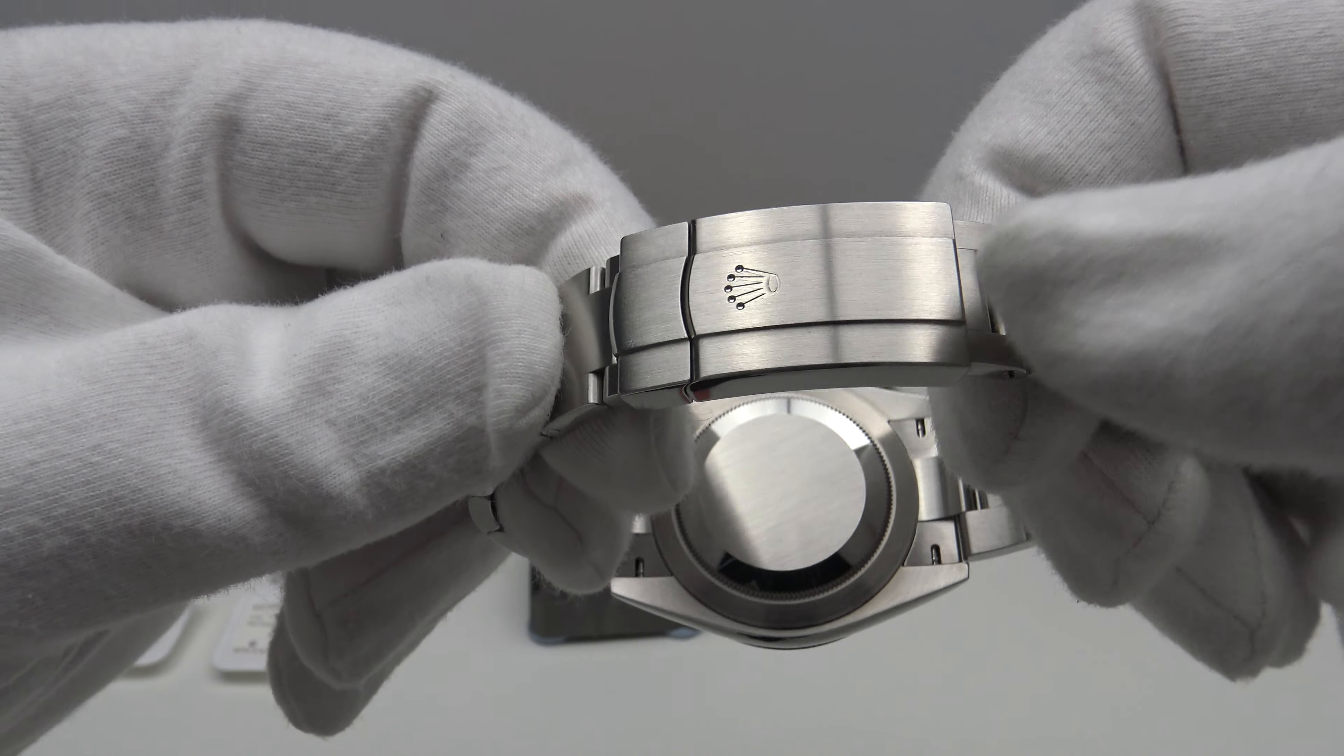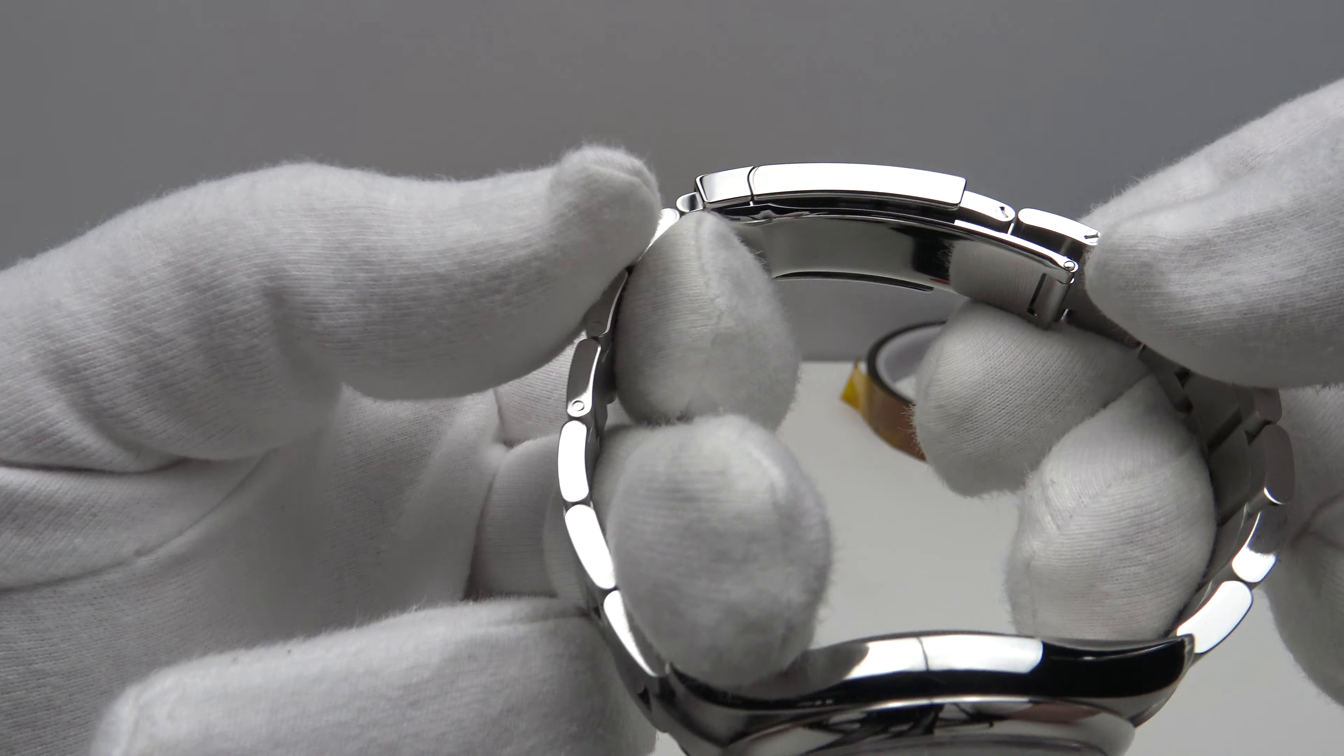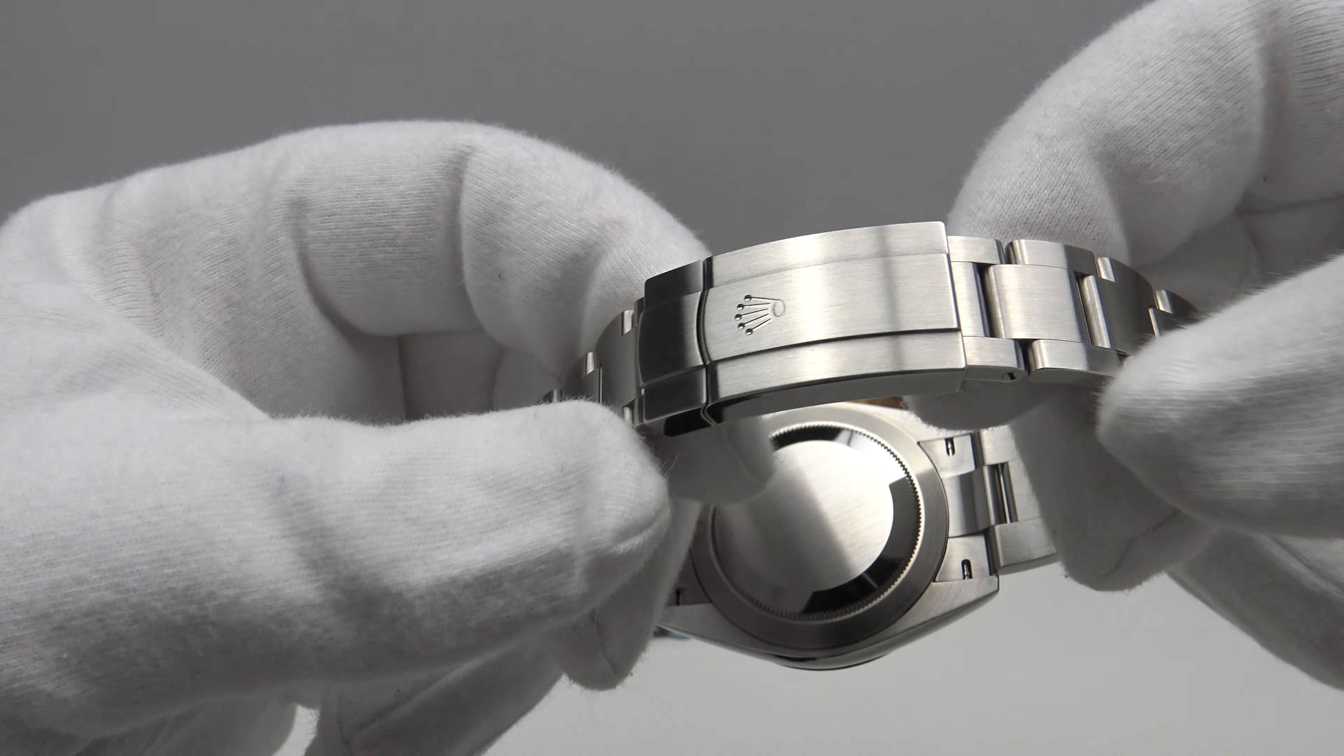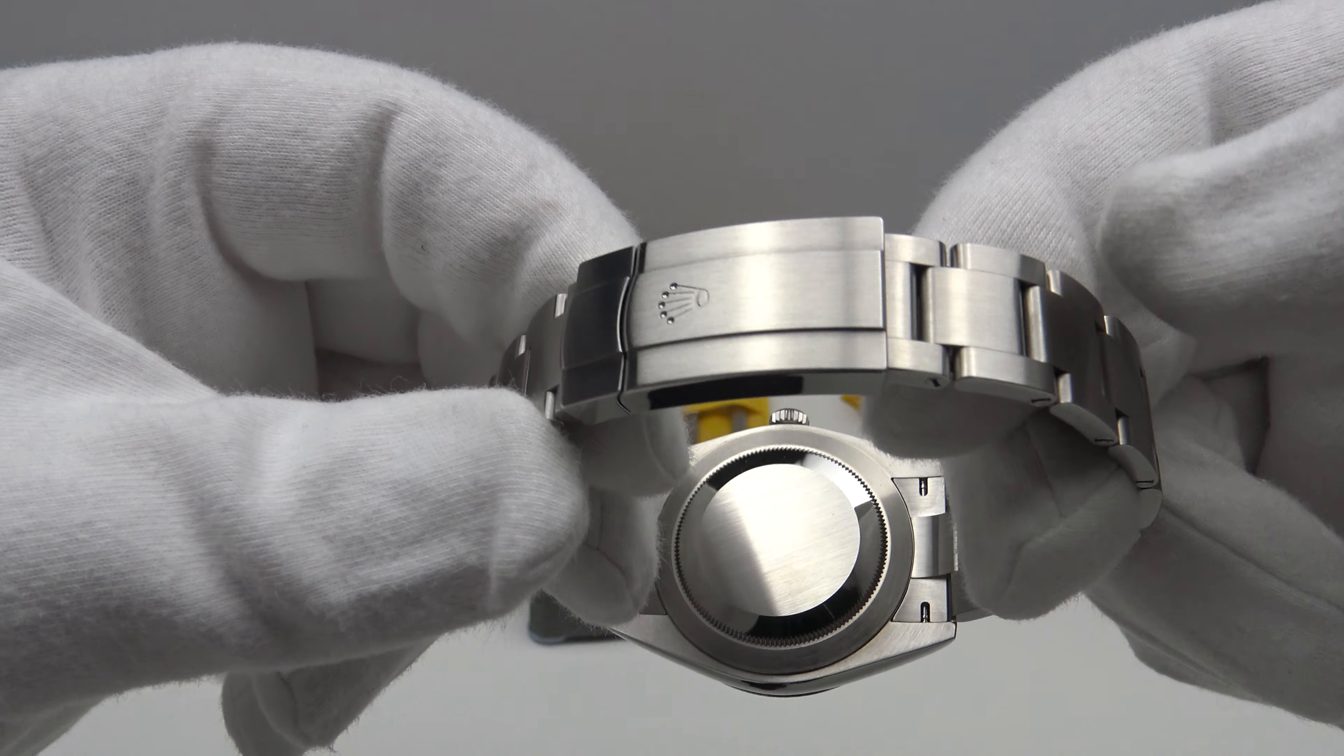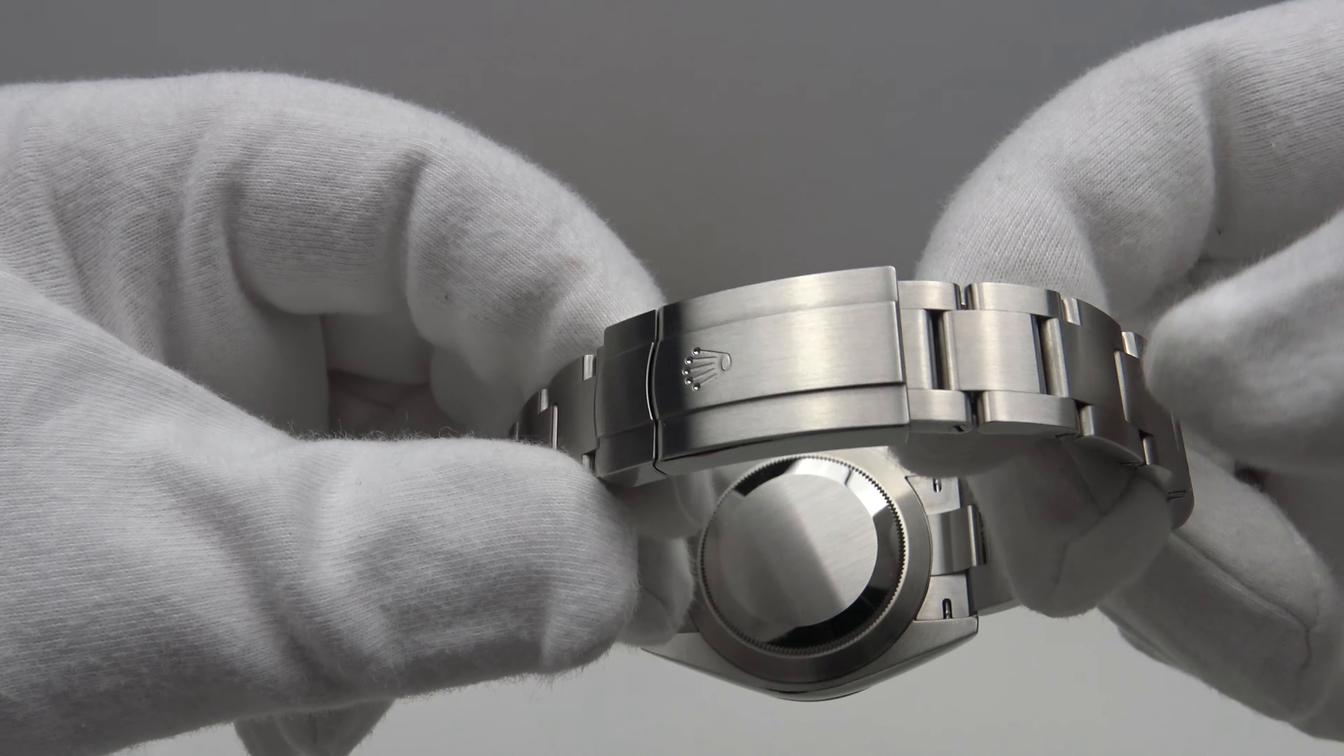And the reason for that is the clasp used on the 41 is actually shorter. As you can see, if you look at the internals, the internals are longer than the exterior. So, the clasp used is shorter than the glidelock clasp, for example, because it doesn't have a flip-flop mechanism.